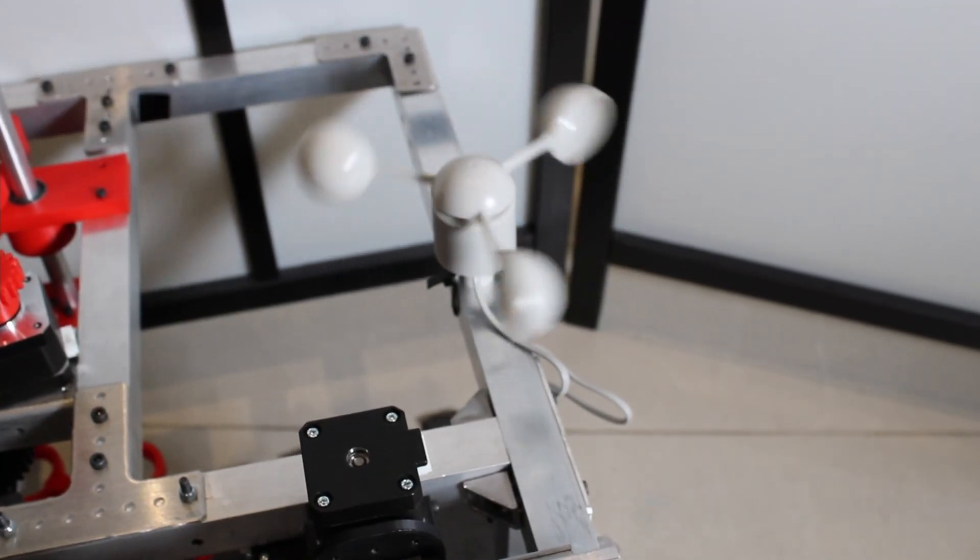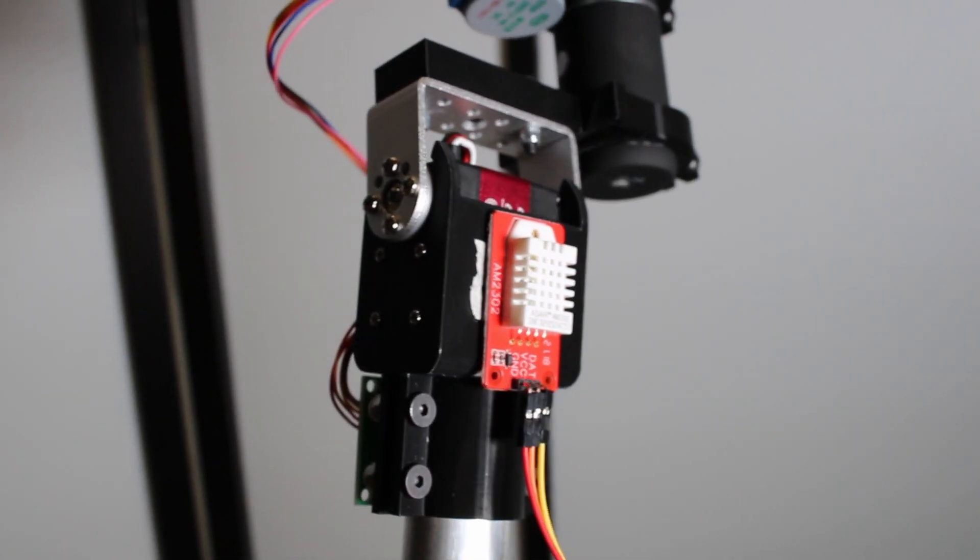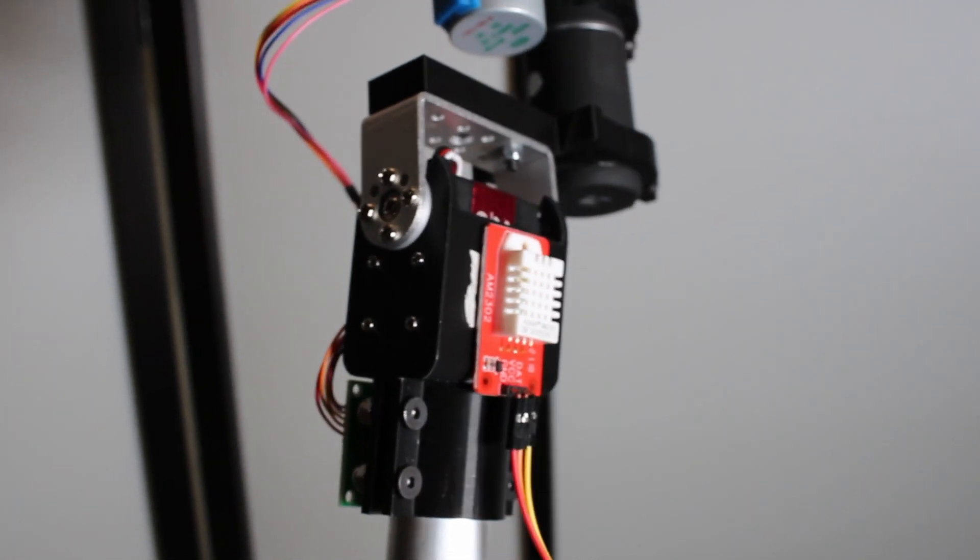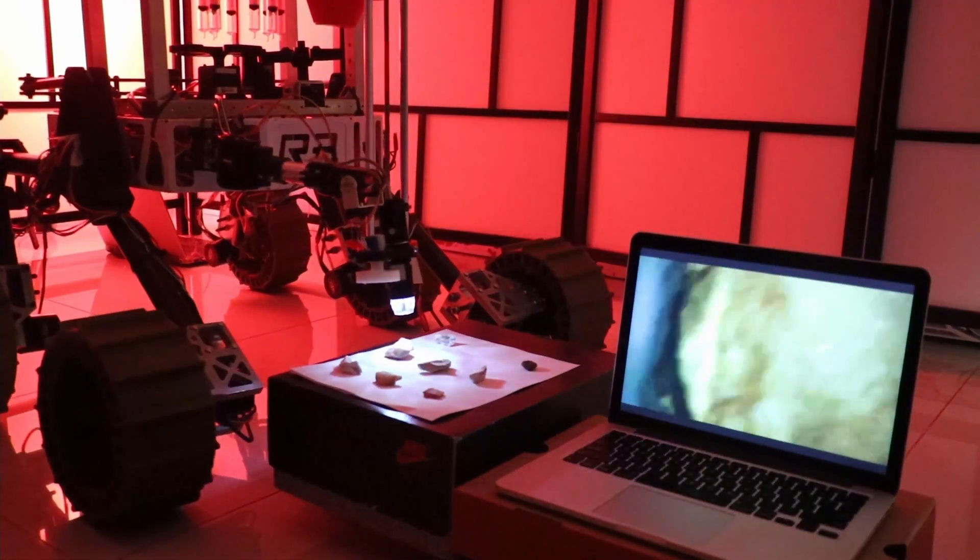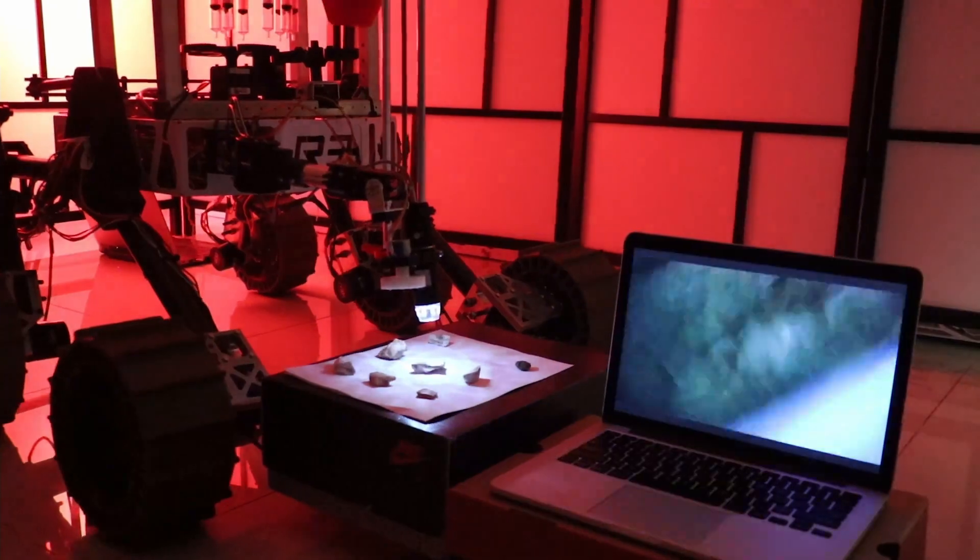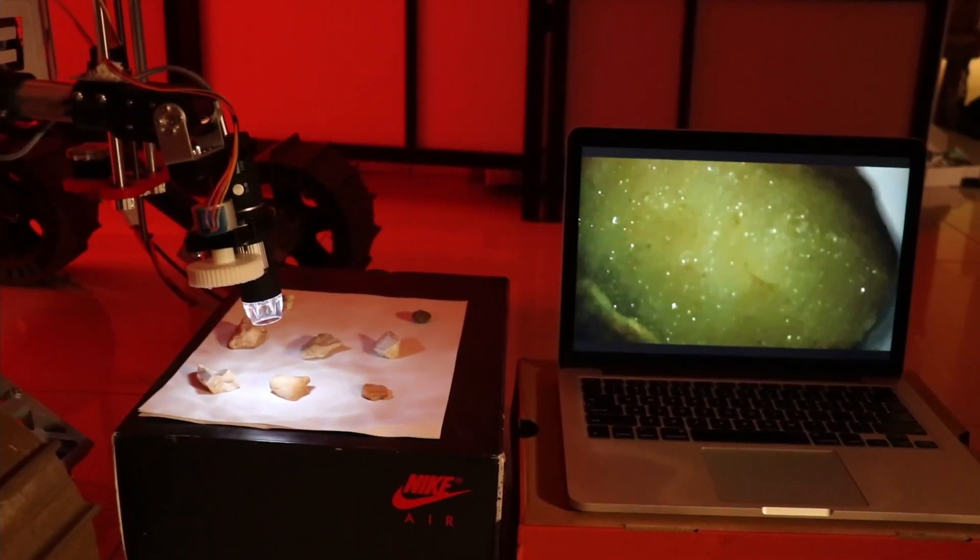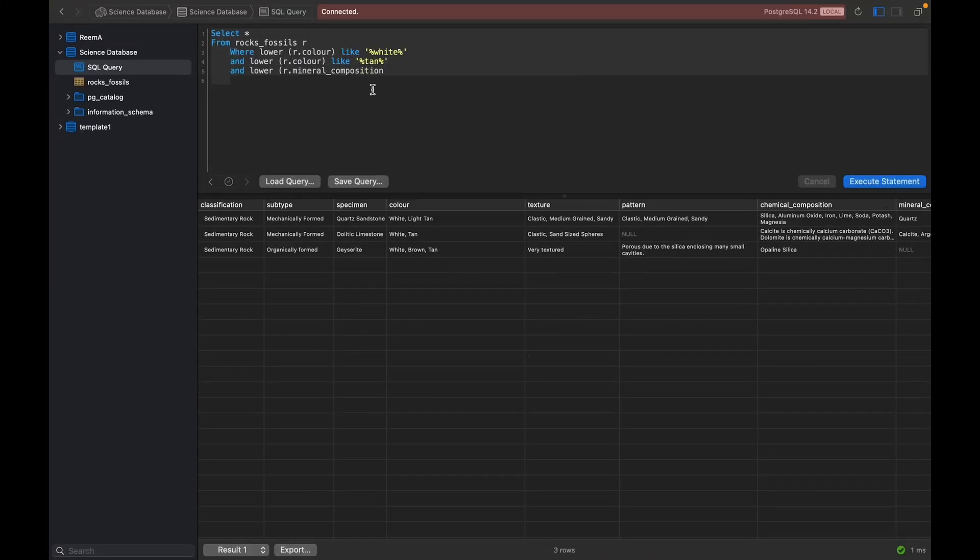Environmental conditions are measured using an anemometer and a DHT22 temperature and humidity sensor. For geological analysis, a camera and microscope are used to observe rock and fossil specimens which are then identified by comparison with a searchable database.